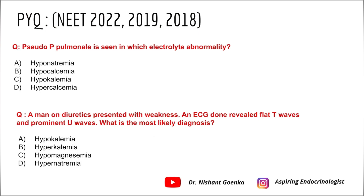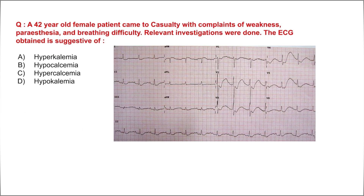Going back to the questions: the first asked about pseudo P pulmonale — a slightly peaked P wave — and we now know it is seen in hypokalemia. For the second question, a man on diuretics with weakness and ECG showing flat T waves and prominent U waves — the drug history, the clinical feature of weakness, and the ECG findings all point clearly towards hypokalemia.